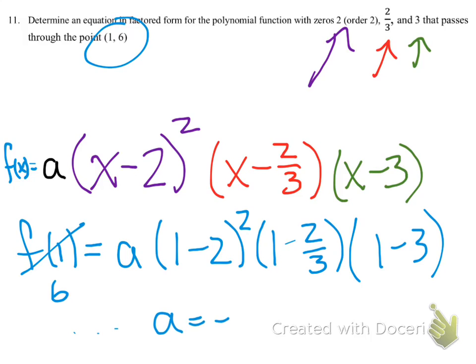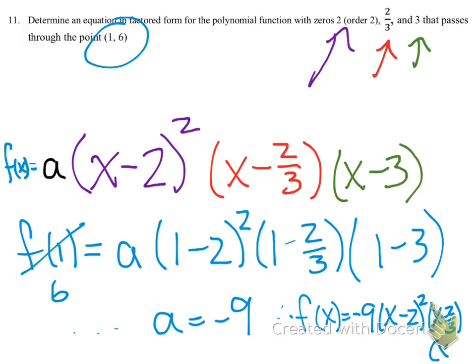Solving for 'a', we eventually get a equals negative nine, giving us our function. That's one possible answer. If you simplified, another possible answer would be negative three times (x minus two) squared times (3x minus 2) times (x minus 3).